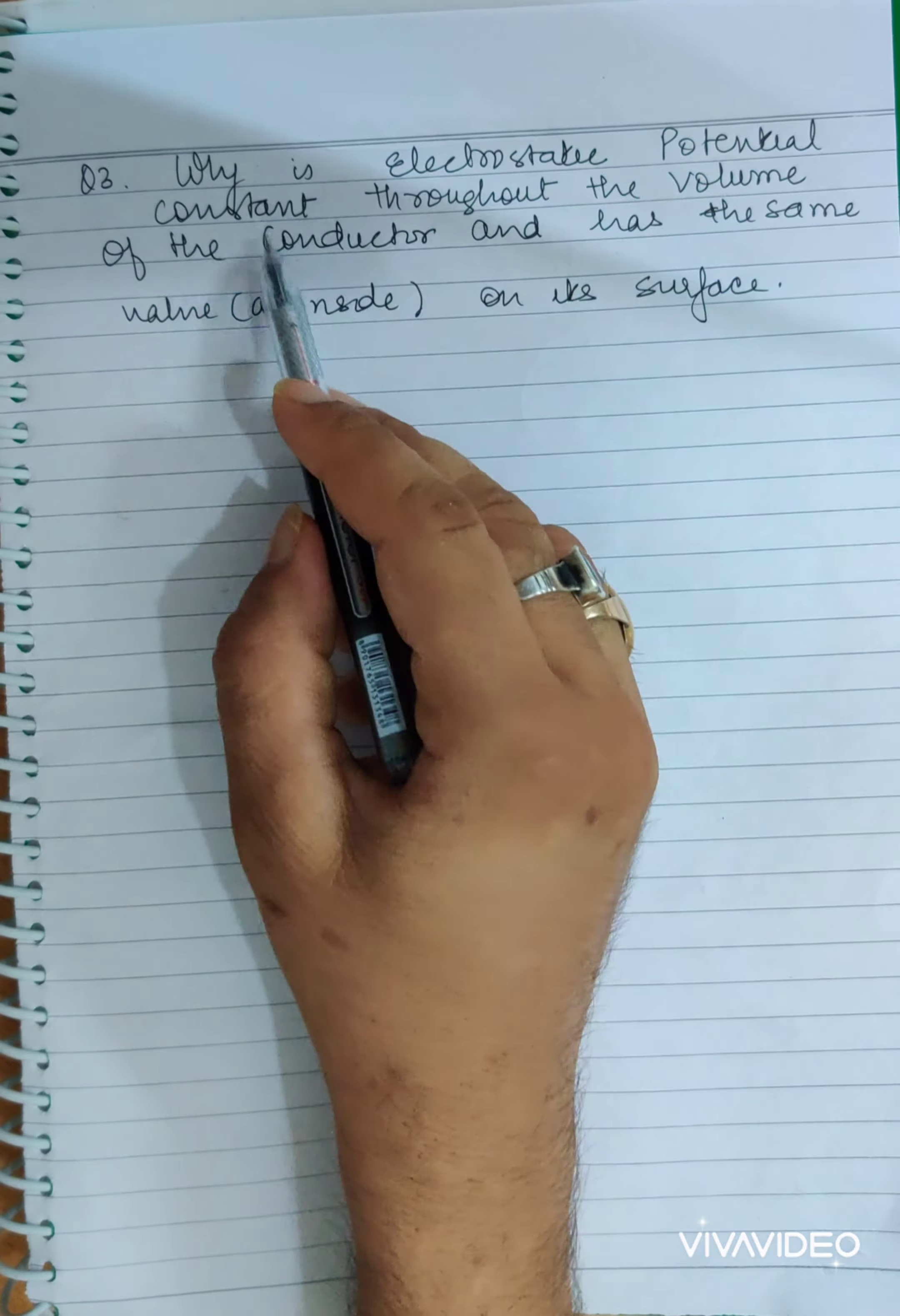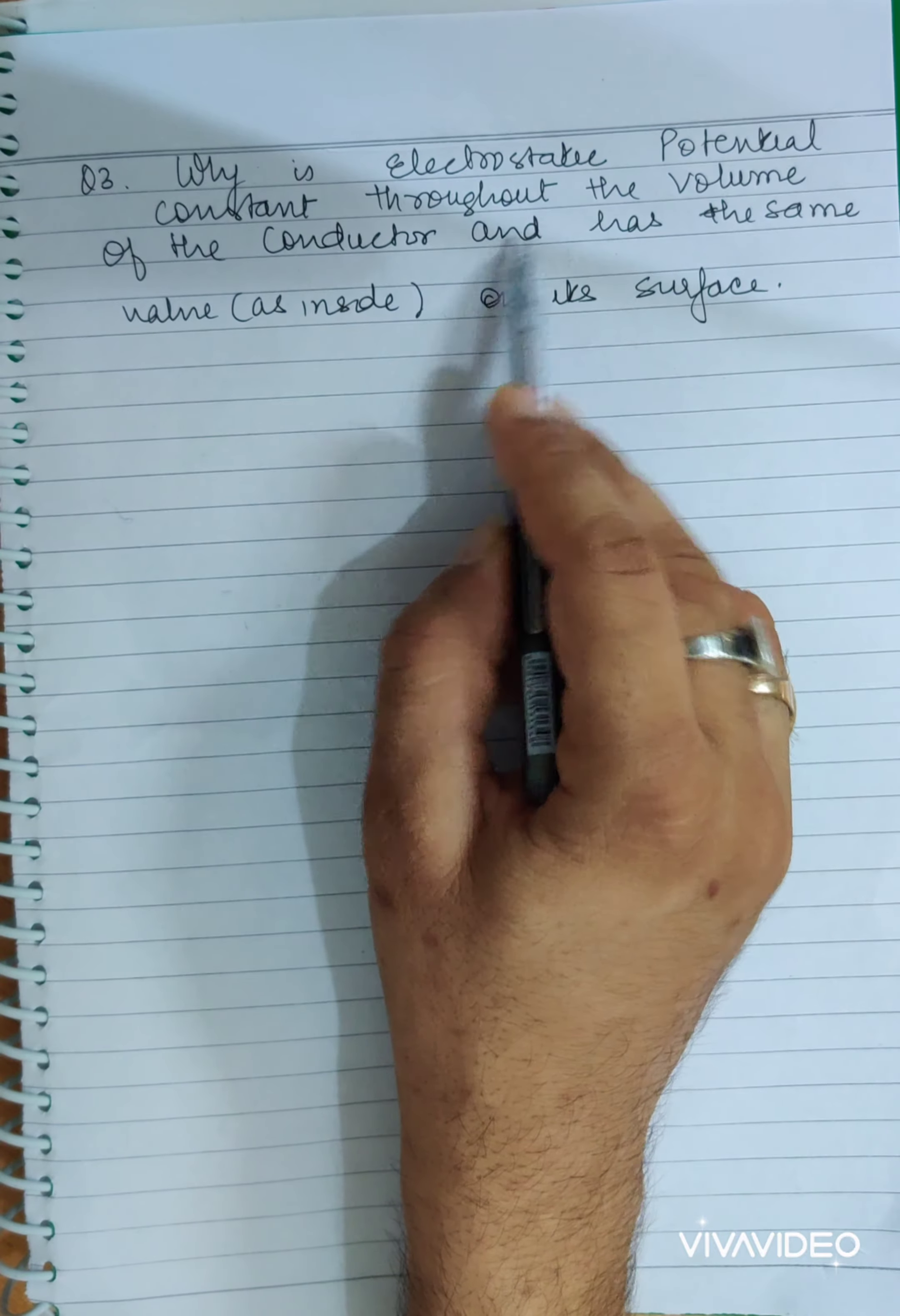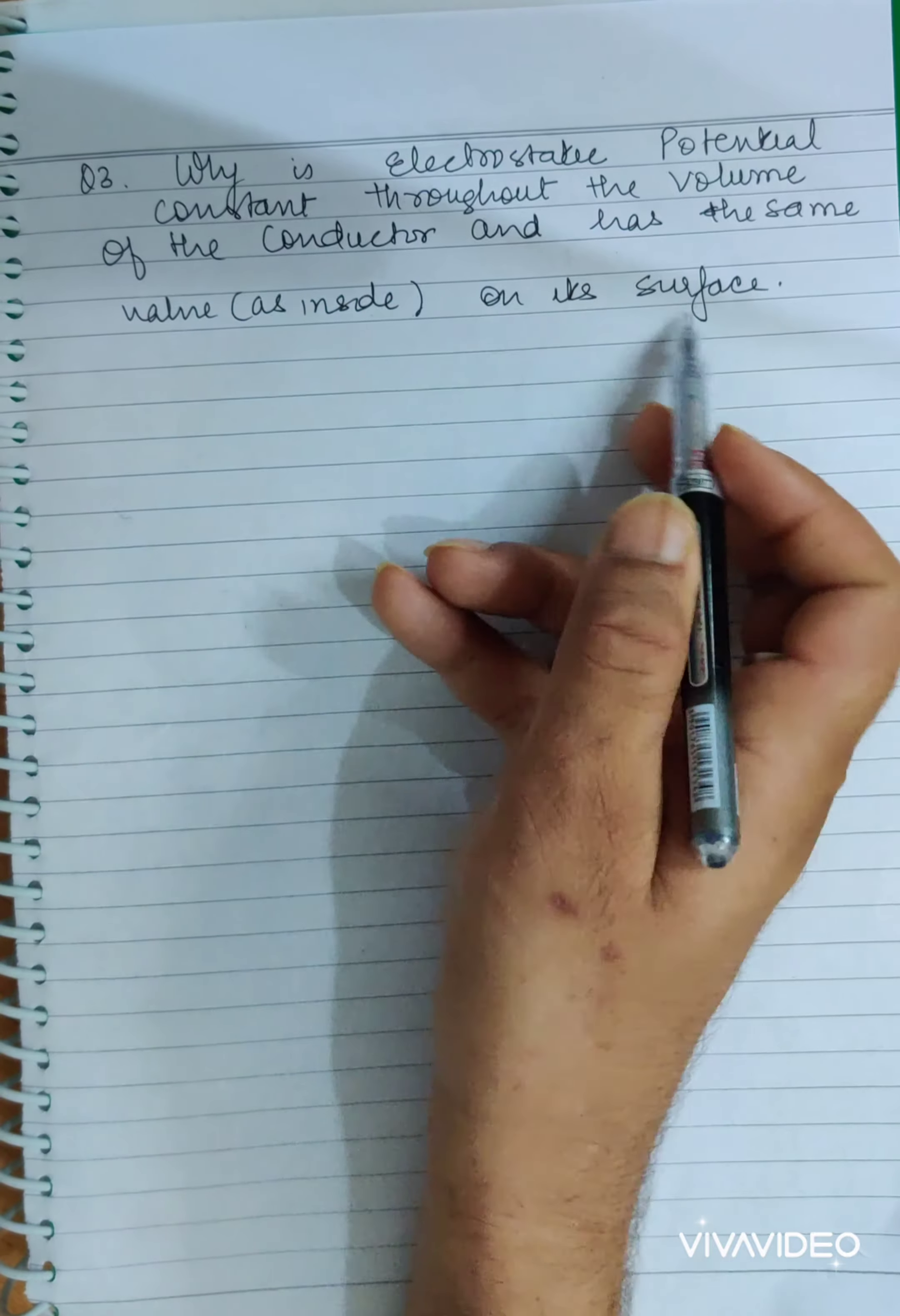Why is the electrostatic potential constant throughout the volume of a conductor and has the same value on its surface as inside?